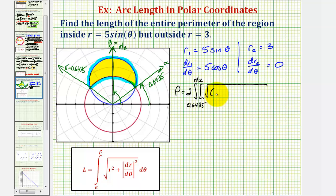That would be five sine theta squared plus dr d theta squared, which would be five cosine theta squared, plus the square root of r sub two squared plus dr sub two d theta squared, which would be zero squared.